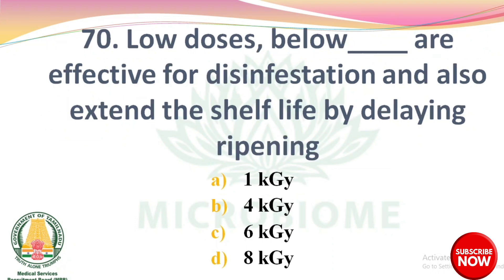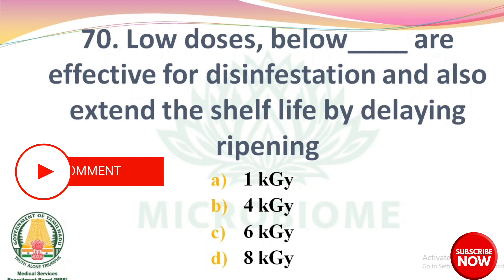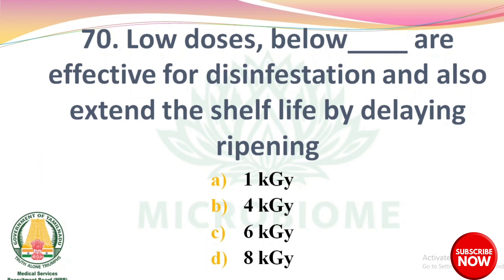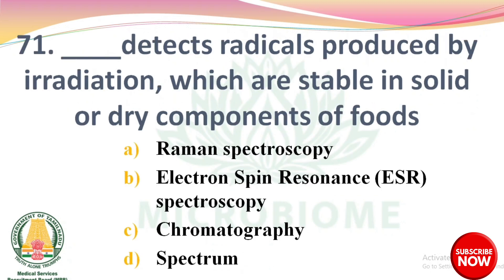Next question: low doses below dash are effective for disinfestation and also extend shelf life by delaying ripening. Options: 1 kGy, 4 kGy, 6 kGy, 8 kGy. The right answer is Option A: 1 kGy. Next question: dash detects radicals produced by irradiation which are stable in solid or dry component conditions of food. Options: Raman spectroscopy, electron spin resonance spectroscopy, chromatography, spectrum. The right answer is Option B: electron spin resonance spectroscopy.